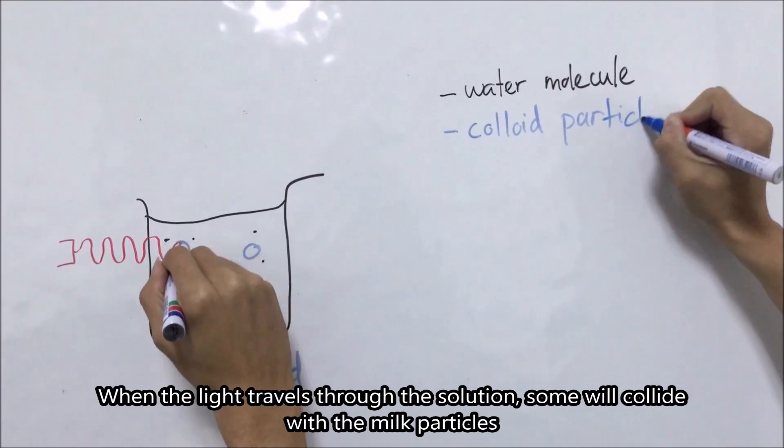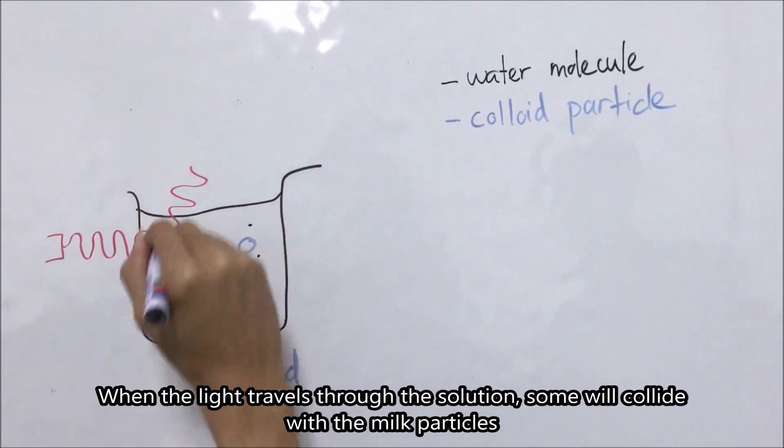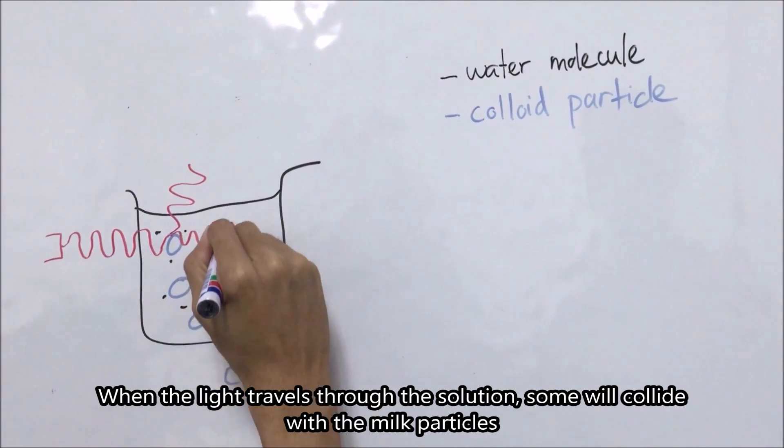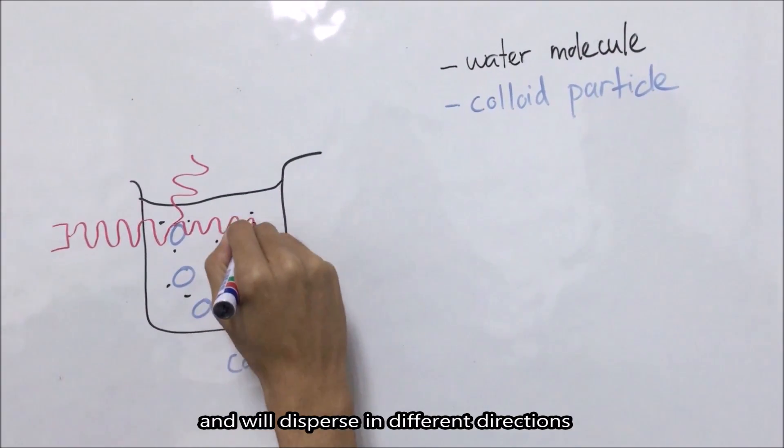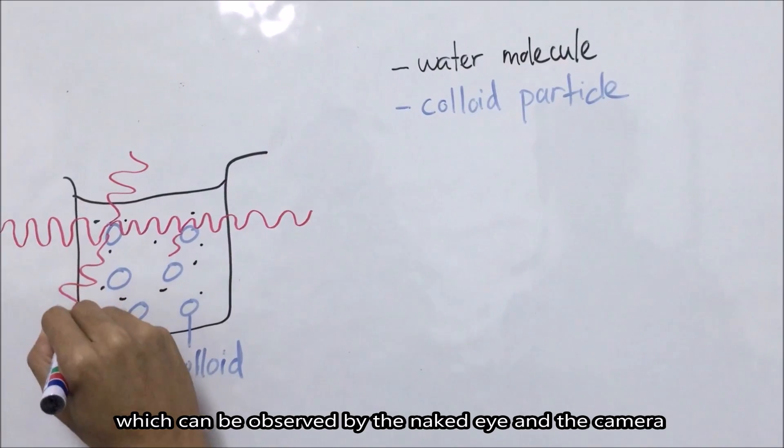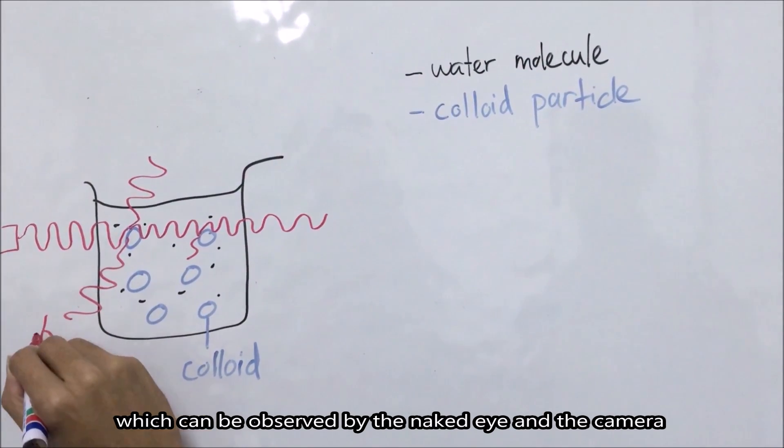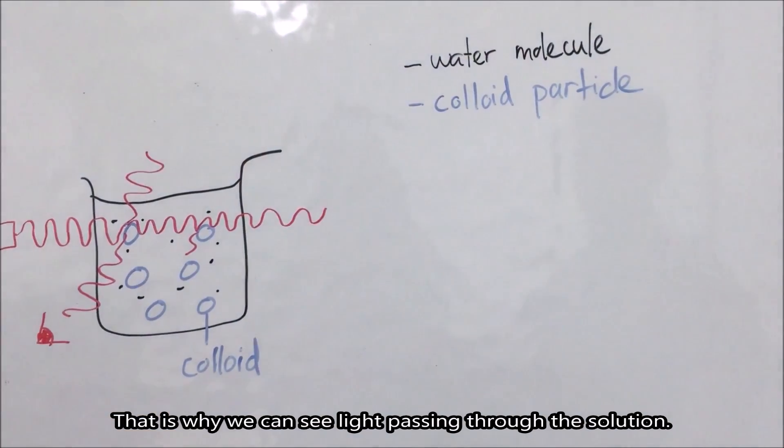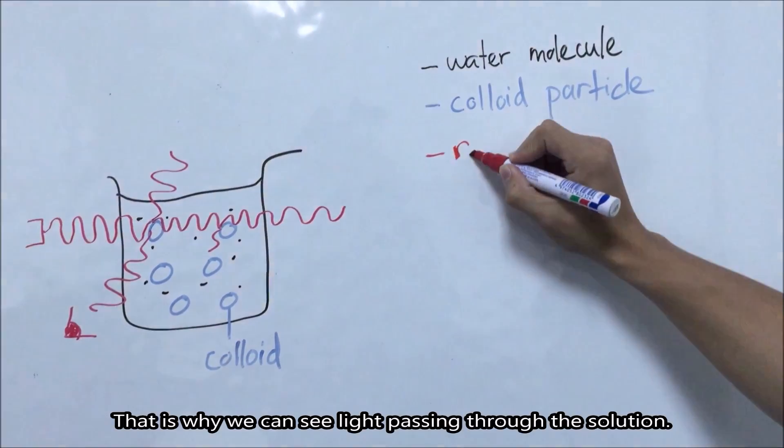When the light travels through the solution, some of the light will collide with the milk particles and will disperse in different directions, which can be observed with the naked eye and the camera. And that is why we can see the light passing through the solution.